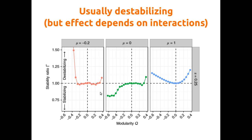This suggests that when we want to connect dynamics with structure — to understand what effect interaction structure has on dynamics — we should be aware that the effect of a particular structure depends on the properties of the interactions themselves. It is not universal and depends on what kind of interactions you have.